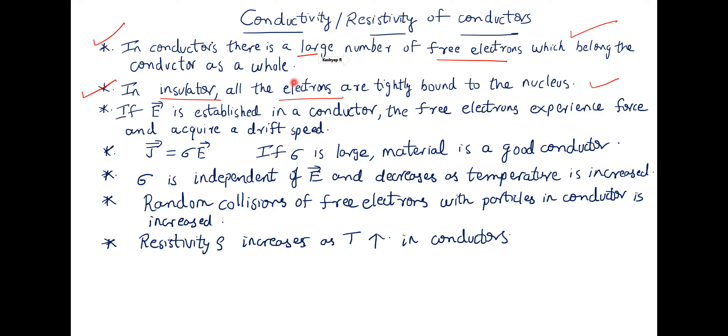Let me ask what your understanding is from chemistry. Why do you think that in insulators the electrons are tightly bound to the nucleus? Is there any reason you know of that can shed some light on this topic? The electrons are not behaving like free electrons.